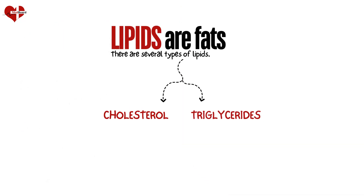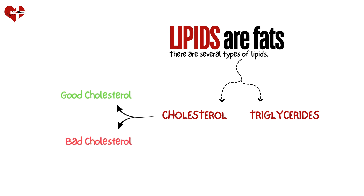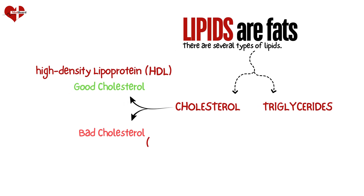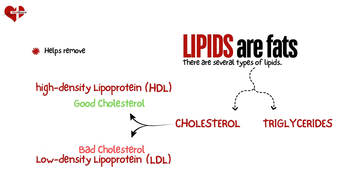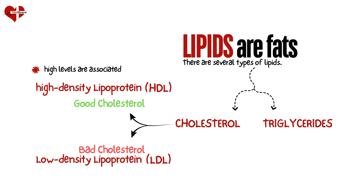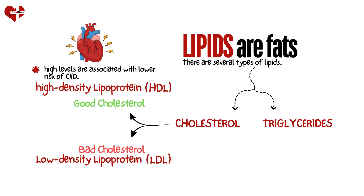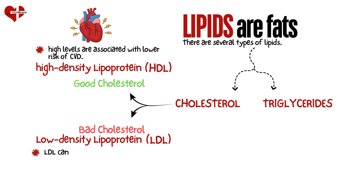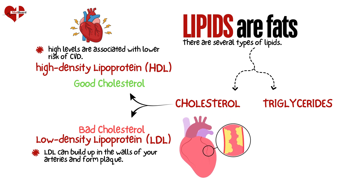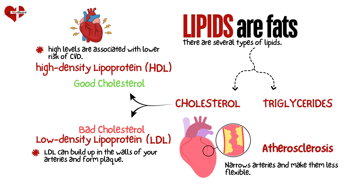Cholesterol can also help in the production of bile acids which play a vital role in the human digestive system. Cholesterol is further divided into two types: a good one and a bad one. The good one is HDL, high-density lipoprotein, and the bad one is LDL, low-density lipoprotein. HDL helps remove other forms of cholesterol from your bloodstream and higher levels of HDL are associated with a lower risk of heart diseases. On the other hand, LDL can build up in the walls of your arteries and form plaque, leading to narrowing of your arteries and making them less flexible. This condition is commonly known as atherosclerosis and it leads to an increased risk of heart attack and stroke.